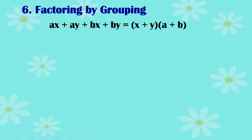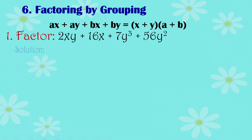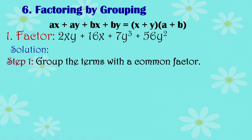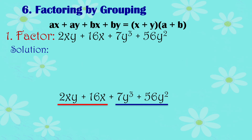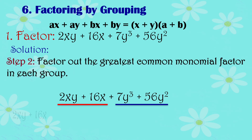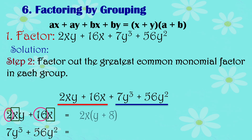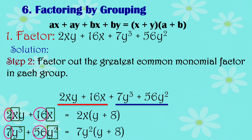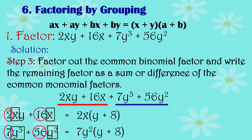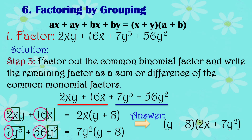Number 6: Factoring by Grouping. The pattern is ax plus ay plus bx plus by equals the quantity x plus y times the quantity a plus b. Step 1: Group the terms with a common factor. Step 2: Factor out the greatest common monomial factor in each group. Step 3: Factor out the common binomial factor and write the remaining factors as the sum or difference of the common monomial factors. That is the answer.